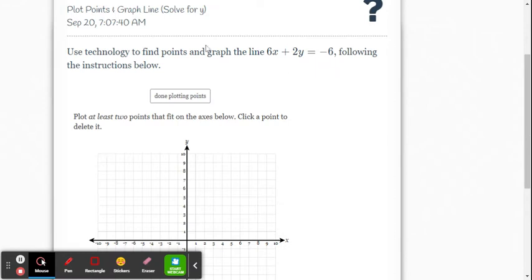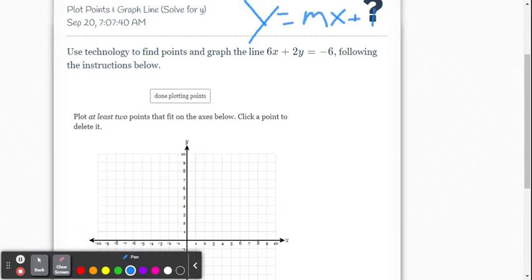Then you're going to show your work on how you rewrite that into slope-intercept form, which we know is y equals mx plus b, where m is the slope value and b is the y-intercept. So let's do that first.